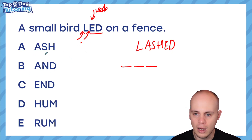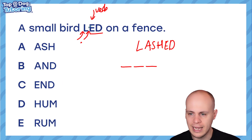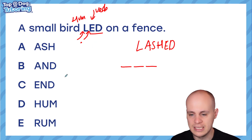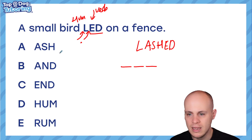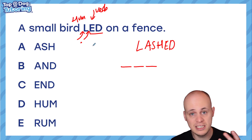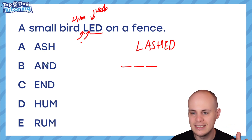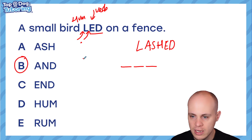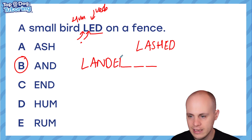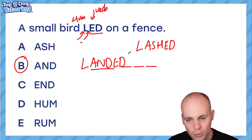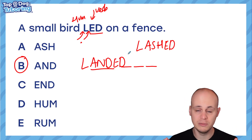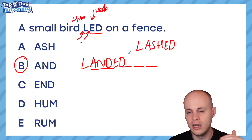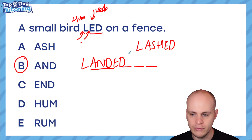If we scan the other options, I wonder if any sounds jump out. Lashed, hummed — doesn't make sense. Rumbled, lended — did the bird lend Dylan some money? Doesn't make sense. And land — of course, I've been a fool and skipped past the one. The answer is of course B. If I do L-A-N-D-E-D, I've put AND in the middle between L-E-D, I've got the word landed. So that's how these questions work. We'll work through a few more together and I've got more tips as the questions get harder.